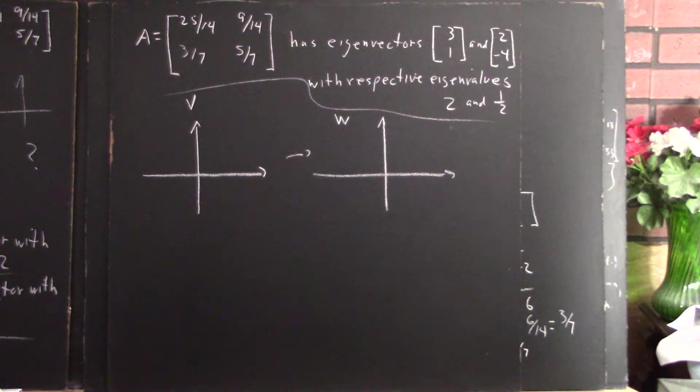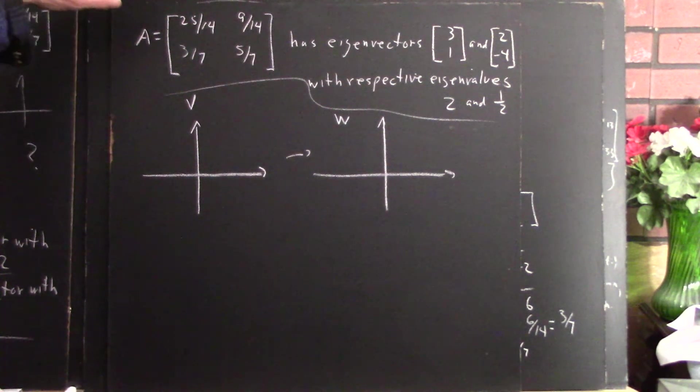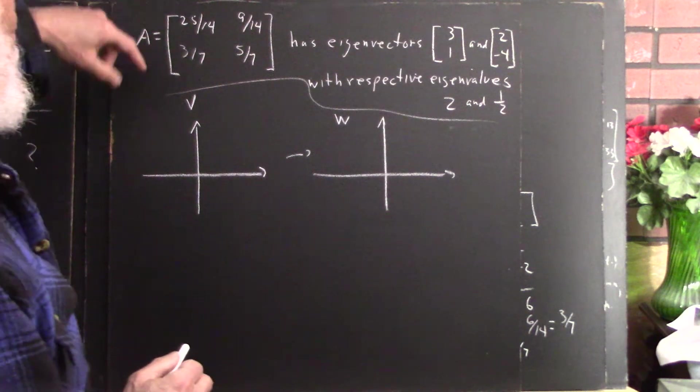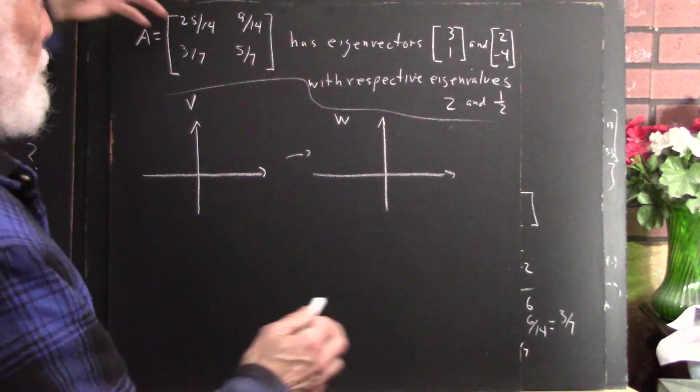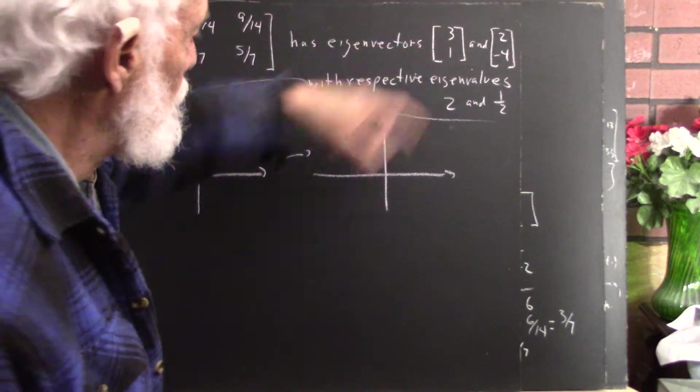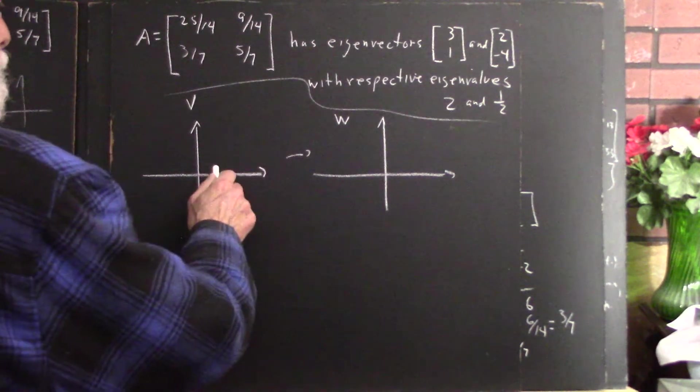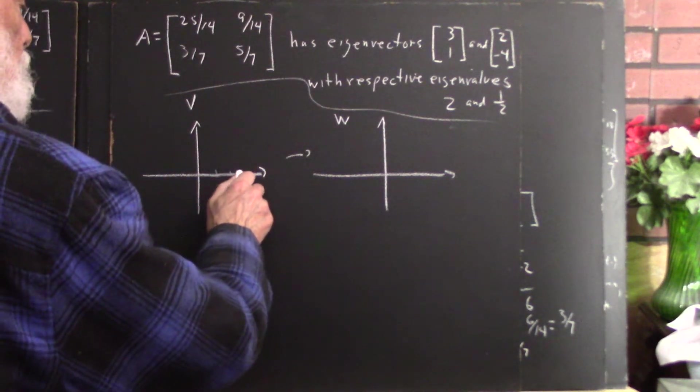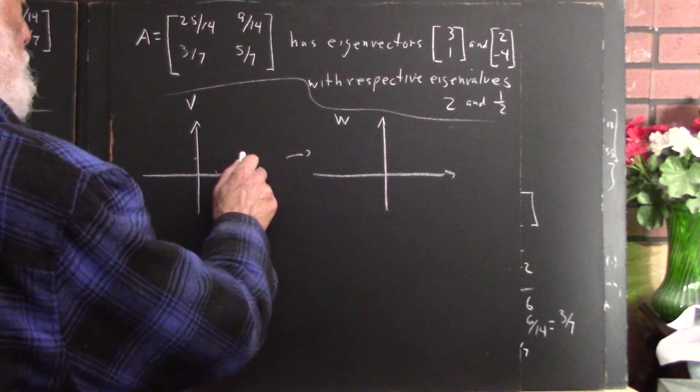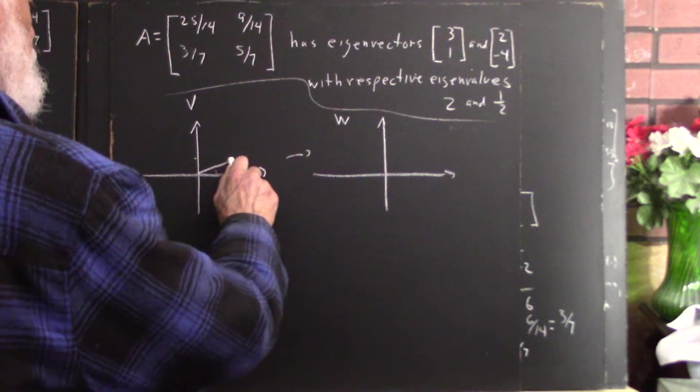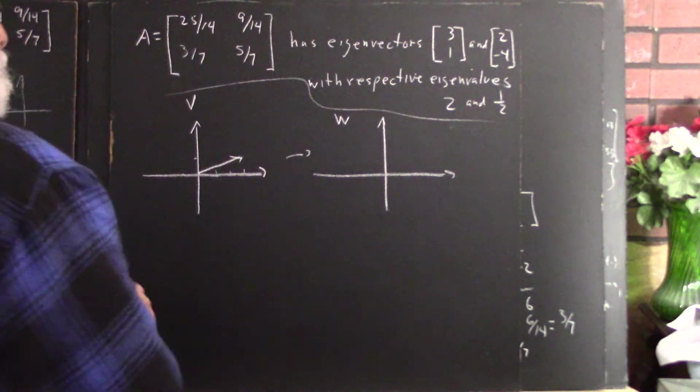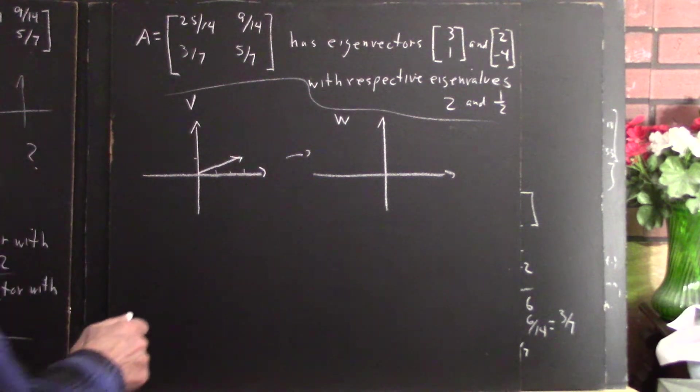And if, well, okay, this transformation has eigenvector 3, 1. So let's just draw that eigenvector 1, 2, 3, 1. We've used that vector a lot so far. Okay, there's our vector 3, 1.